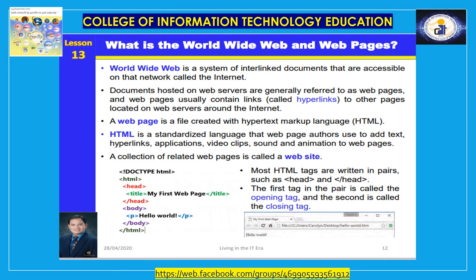What is the World Wide Web? In our discussion of the internet, we have made several references to the World Wide Web. While the internet is a network comprised of hardware connections, the World Wide Web is a system of interlinked documents that are accessible on that network. There are countless millions of documents hosted on web servers, and if you can access a document by typing its address into a web browser or by clicking a link, that document is part of the World Wide Web. Documents hosted on web servers are generally referred to as web pages, and web pages usually contain hyperlinks to other pages. These hyperlinks form the connections that make the World Wide Web possible.